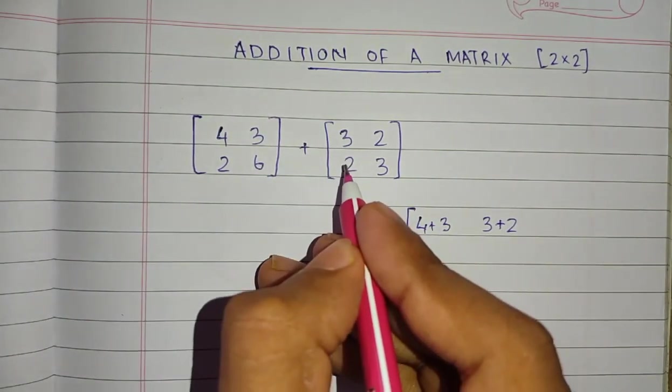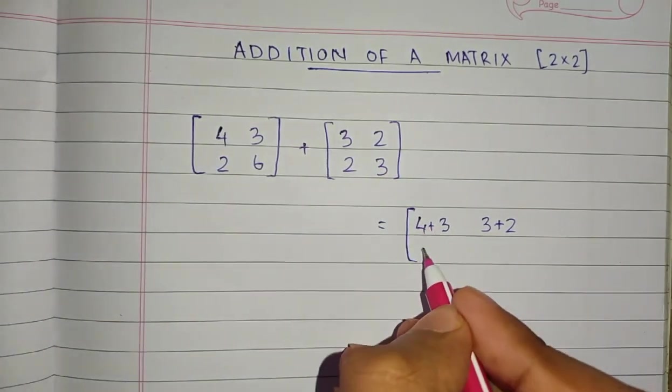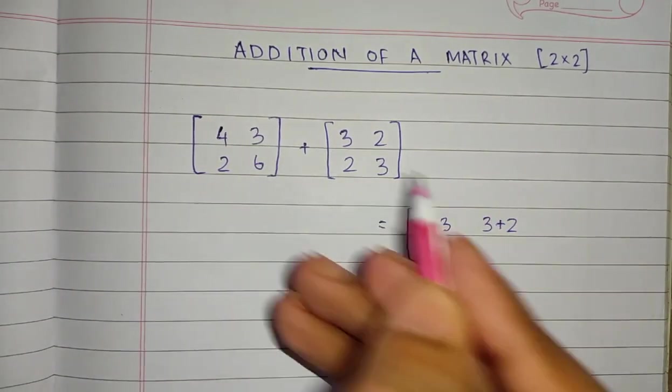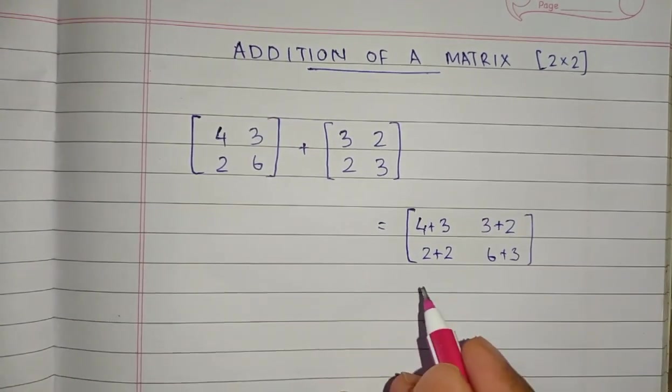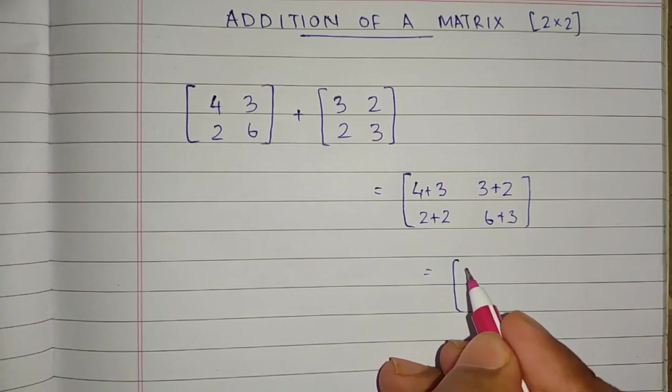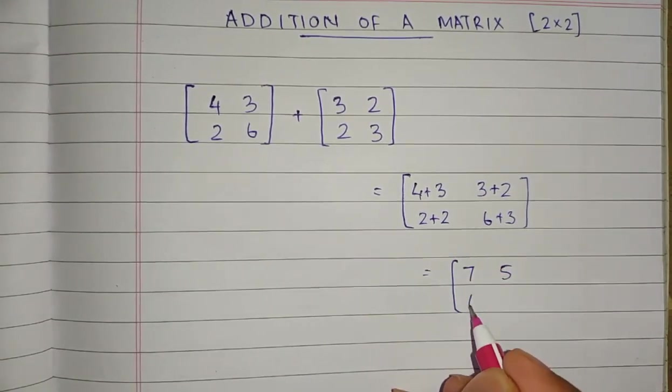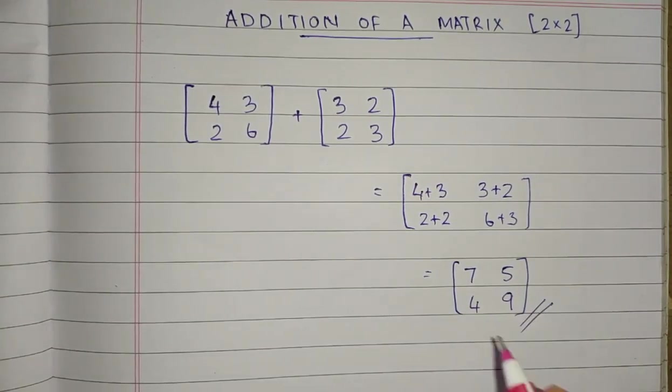We take the same element in the same position of the second matrix, 2, and put a plus sign: 2 plus 2. Similarly, 6 and 3. So we will get the answer: 4 plus 3 equals 7, 3 plus 2 equals 5, 2 plus 2 equals 4, 6 plus 3 equals 9. This is the matrix sum of these two matrices.